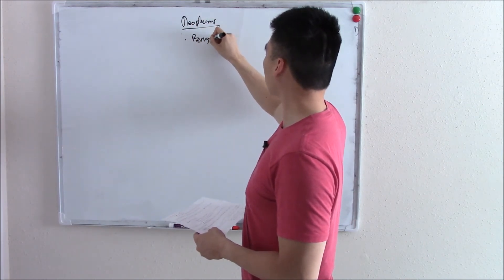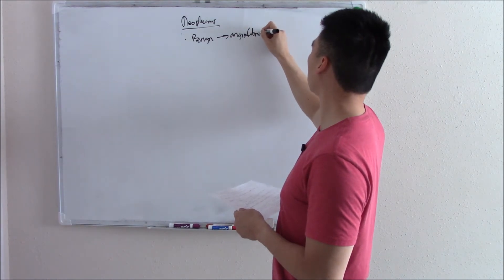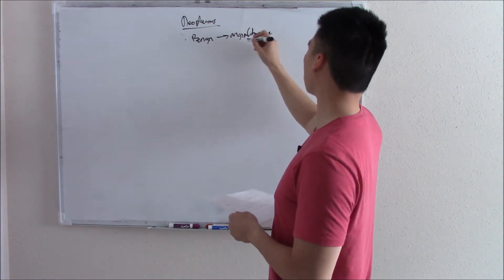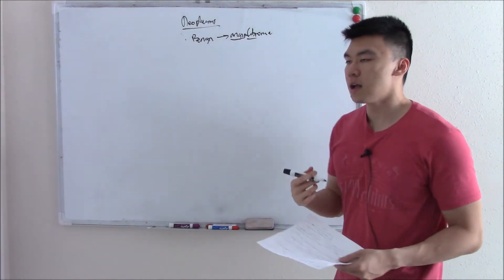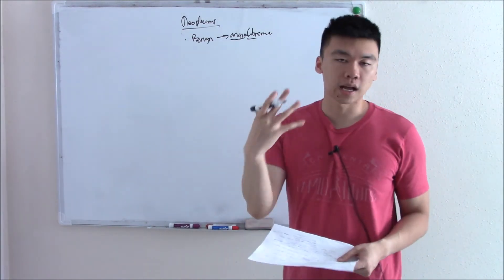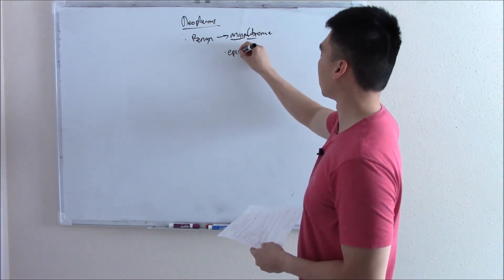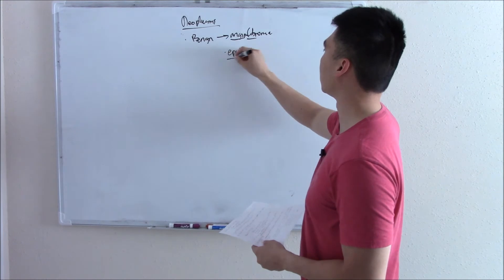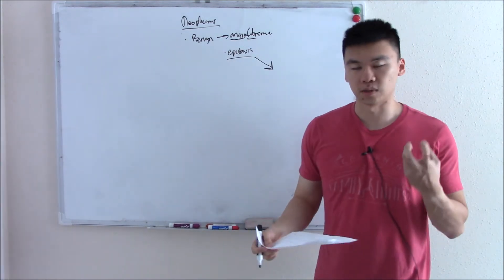There's a common benign one called angiofibroma. Judging by the name, it has fibrous tissue and blood vessels. Angio means related to blood vessels. So this is going to be a very vascular tumor. And because it's vascular, you can cause bleeding. Epistaxis. That's all I really want to talk about for angiofibromas. I want to do a little side note on nosebleeds. Epistaxis.